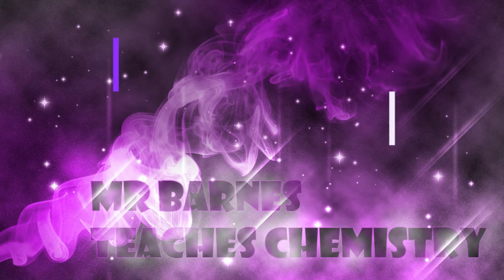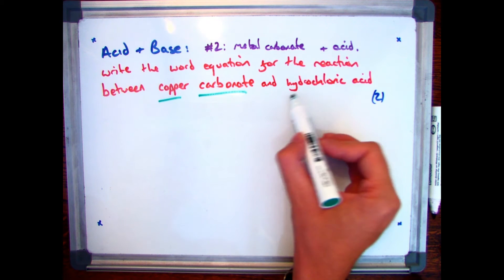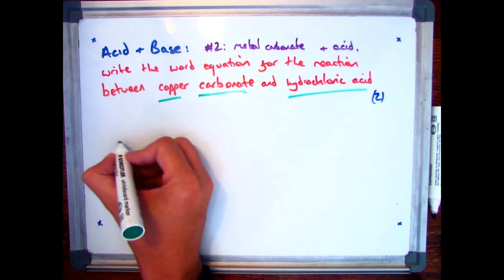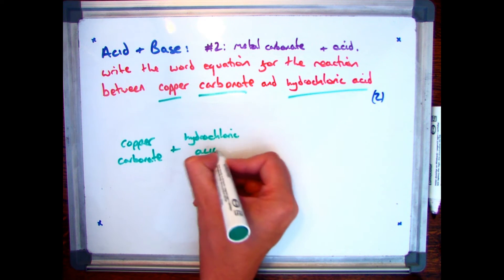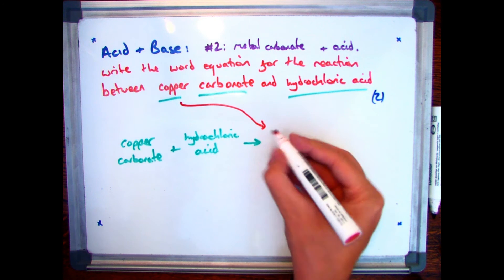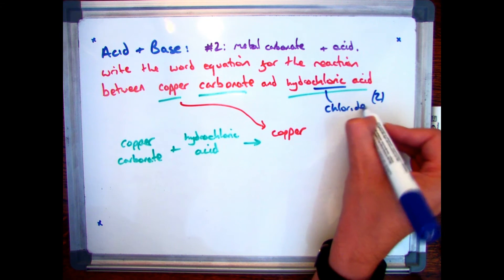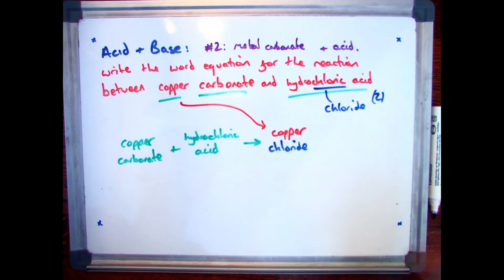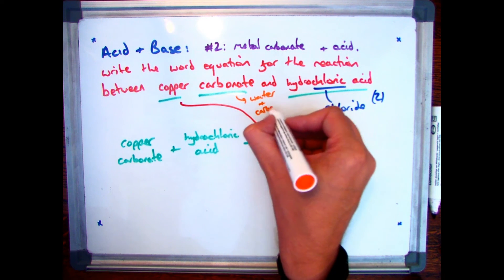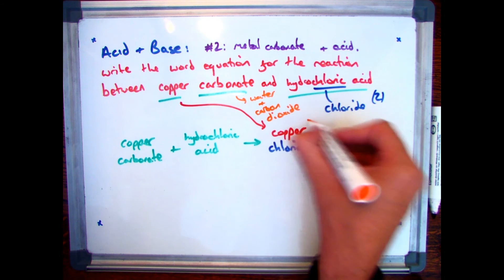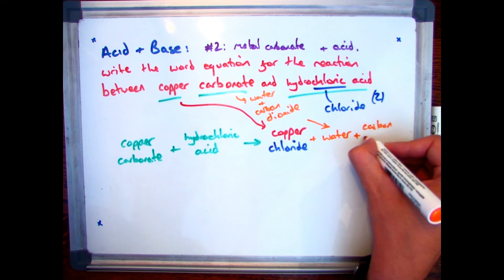The final part of this section looks at what happens when you react a metal carbonate and an acid together. The example here is the reaction between copper carbonate and hydrochloric acid. So: copper carbonate plus hydrochloric acid. We take the name of our metal, copper, and since we have hydrochloric acid, the salt ending is chloride — so copper chloride for one mark. The key difference is if you have a carbonate, you get two by-products: water and carbon dioxide. So you get one mark for copper chloride and one mark for water plus carbon dioxide.